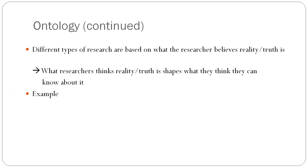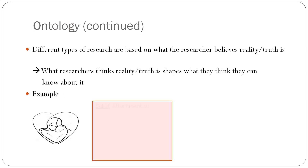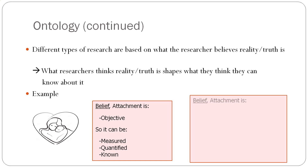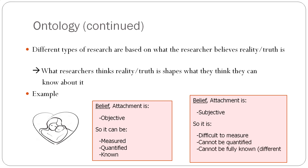For example, let's go back to attachment. If one believes that attachment is objective, then it can be measured, it can be quantified, it can be known. On the other hand, if someone believes that attachment is subjective, then it is difficult to measure, it cannot be quantified, and it cannot be fully known. So there are different meanings for different people.